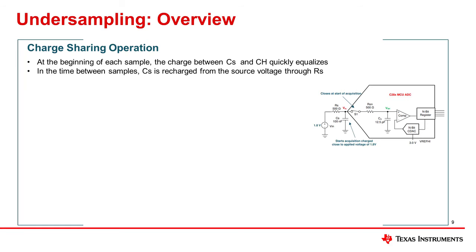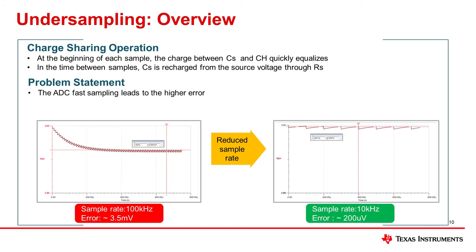A typical charge sharing input circuit design is shown here. At the beginning of each sample, the charge between CS and CH quickly equalizes, causing CS to drop less than 0.5 LSBs and CH to charge to within 0.5 LSBs of the applied voltage. This ensures that CH reaches the settling target even when the sample and hold duration is very short. In the time between samples, CS is recharged from the source voltage through RS. However, significant tracking error occurs when the ADC samples too fast relative to the source's ability to recharge CS through RS in the time between samples.